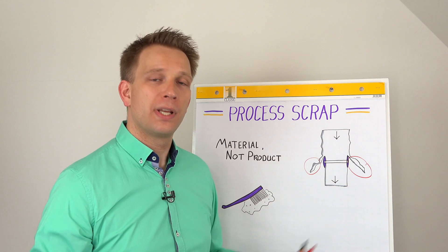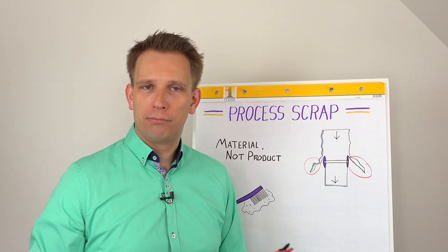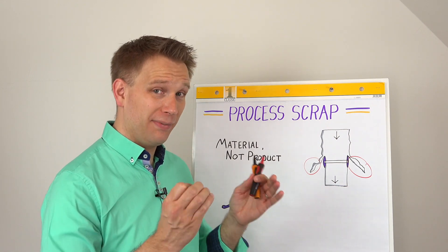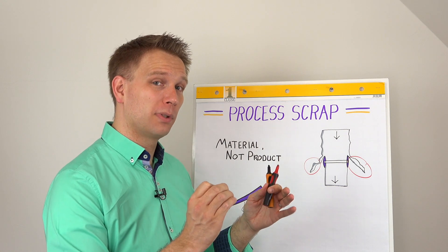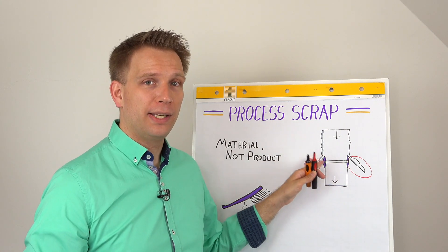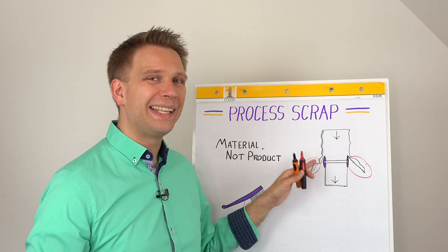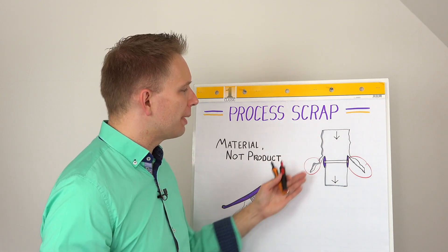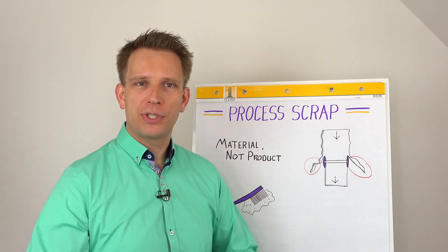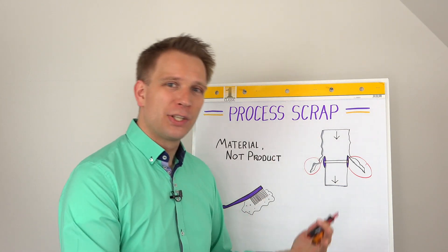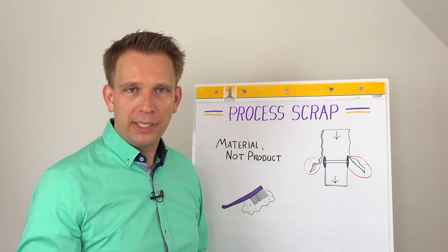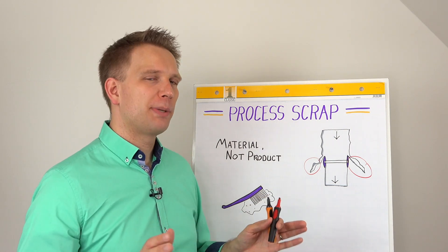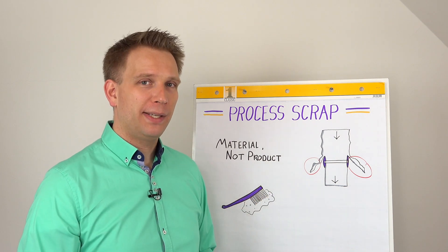Now, these offcuts are often relatively easy to find. Although, as I said, if it's reworked or melted down quickly, be very careful that you also need to have that stream in your analysis. But usually most of this scrap is put into separate bins, sold to some company that reworks it, or a waste company. And these streams are often pretty well documented.